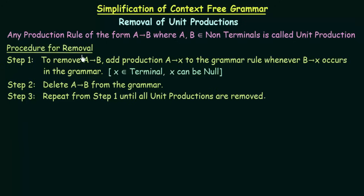Let's see what procedures we need to follow in order to do that. Step one says: to remove A gives B, add a production A gives X to the grammar rule whenever B gives X occurs in the grammar, where X is a terminal symbol and X can also be null. So whenever you have a unit production A gives B, you add A gives X whenever B gives X occurs in the grammar. After doing this you can delete A gives B from the grammar, then repeat from step one until all unit productions are removed.